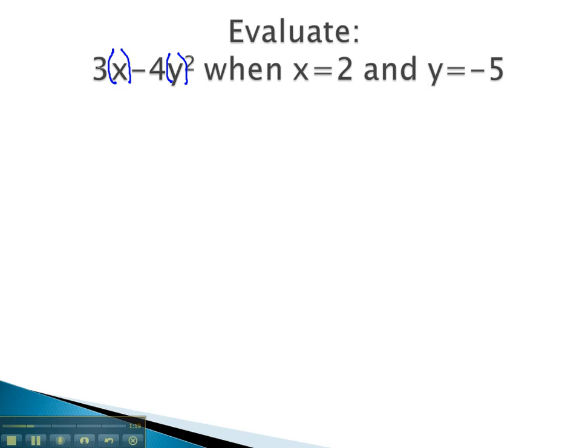What we can do is we will replace the x and the y with parentheses around the number it represents. So this means we have 3x, x represents the number 2, minus 4y, y represents the number negative 5 squared. And all we've done here is we've replaced the x with 2 and the y with negative 5, and now we have an order of operations problem which we can solve.